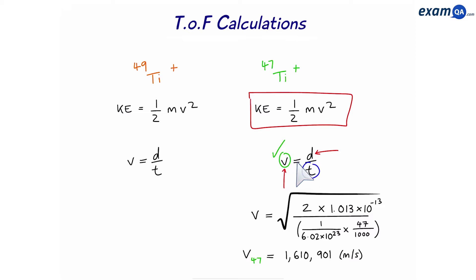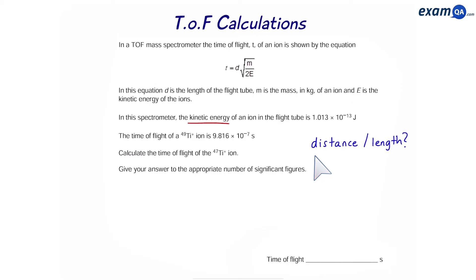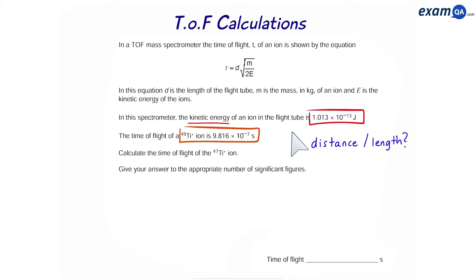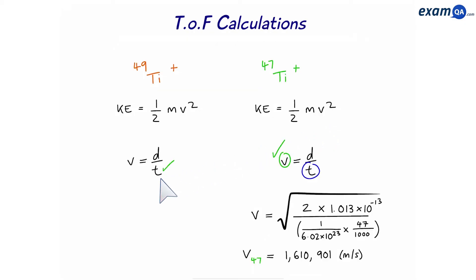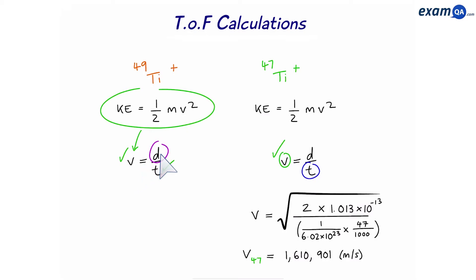Next, we have to work out distance. The question doesn't mention the distance or length of the flight tube, but they've given us the time of flight of Ti-49. Since the kinetic energy applies to both ions, we can use Ti-49's data to work out the distance. We have the time for Ti-49, so we can use the velocity equation to work out the velocity of Ti-49. Once we have both, we can work out the distance — and because it's the same machine, the distance is the same for both isotopes.